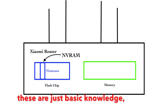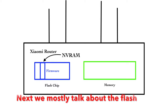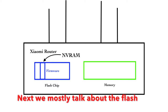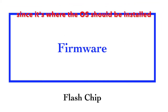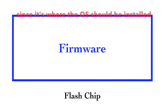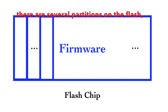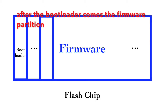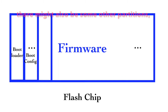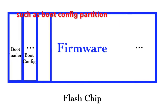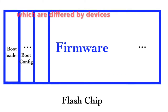These are just some basic knowledge points. We'll mostly talk about the flash chip, since it's where the operating system should be installed. There are several partitions on the flash drive. The first partition is usually the bootloader partition. After the bootloader comes the firmware partition. There might also be some other partitions, such as the bootconfig partition, which differ by device.